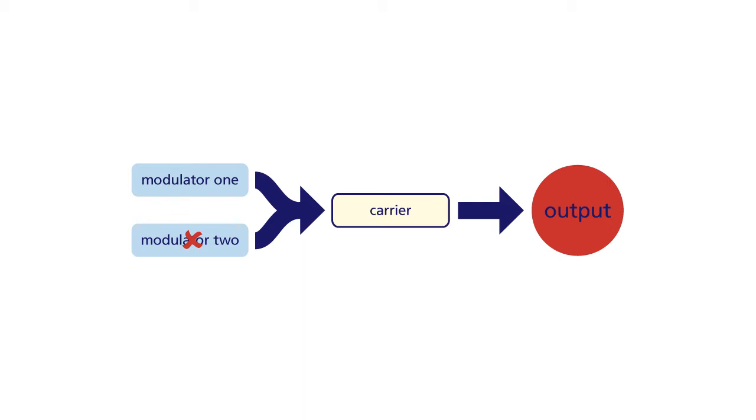If we then silence that modulator and switch in the second modulator, which will be pitched at 16 semitones above the carrier, giving us a 5 to 2 ratio, we get a sort of bell-like sound, but this time it's a much brighter bell sound.